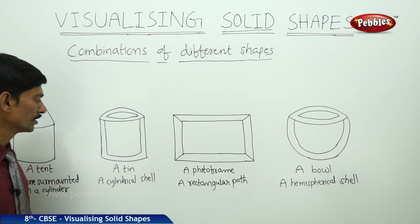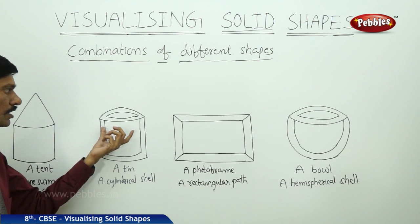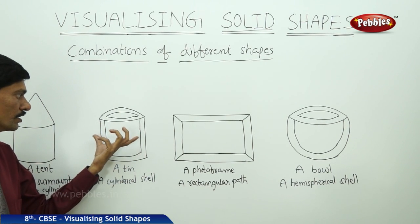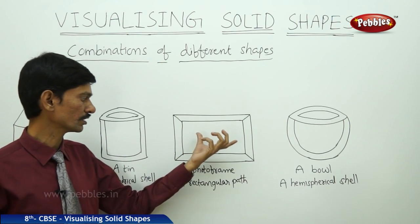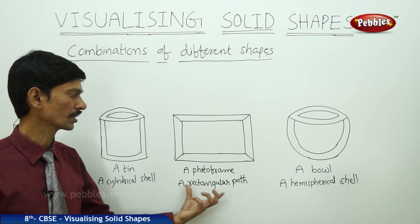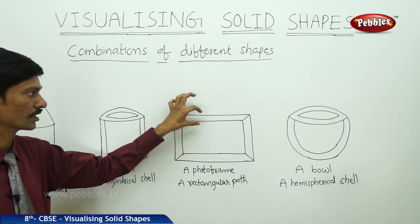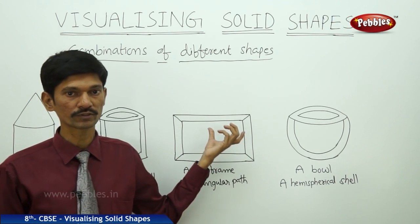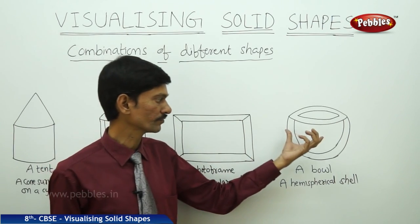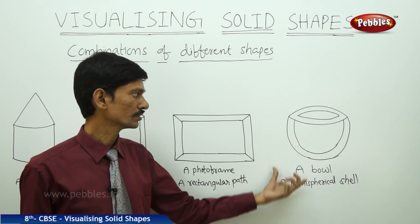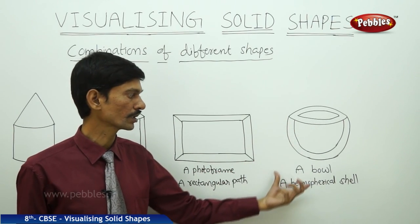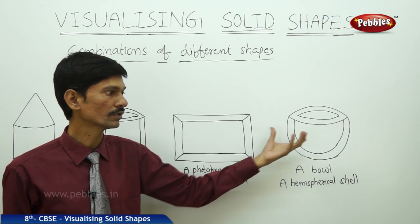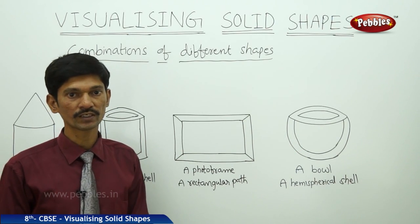The second figure is a tin, which is a combination of two different cylinders: an inner cylinder and an outer cylinder — a cylindrical shell. The third figure is a photo frame, which is a rectangular path with an outer rectangle and an inner rectangle — also a combination of two shapes. The fourth figure is a ball, which consists of two hemispheres: an inner hemisphere and an outer hemisphere — a hemispherical shell.